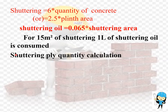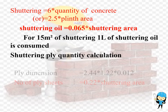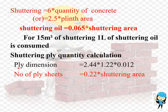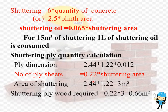Next we are going to calculate the shuttering plywood. We have taken the plywood dimension as 2.44 × 1.22 × 0.012. To calculate the number of plywood sheets required, the formula used is 0.22 × shuttering area. The shuttering area is calculated as length × breadth: 2.44 × 1.22 = 3 m². The number of plywood sheets required is 0.22 × 3 m² = 0.66 m².